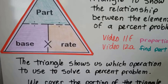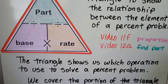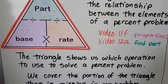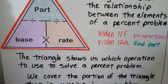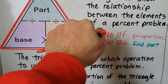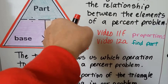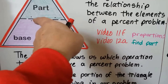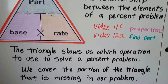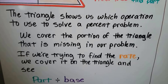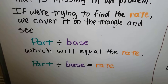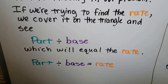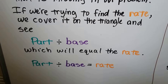The triangle shows us which operations to use to solve a percent problem. We cover the portion of the triangle that is missing in our problem. So if we're trying to find the rate, we cover it on the triangle and see part divided by base — and that's going to equal the rate. Part divided by base equals rate.